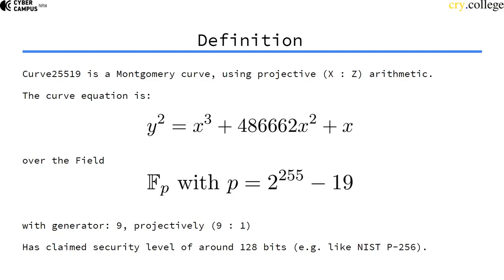So the curve equation is shown here. It's the Montgomery equation and it's defined over the finite field Fp where the prime number is 2 to the power of 255 minus 19. Hence the name Curve25519.